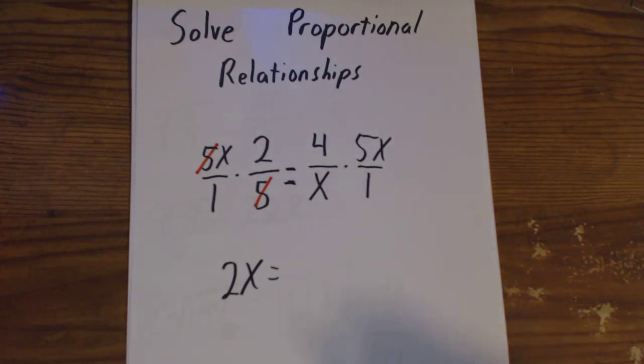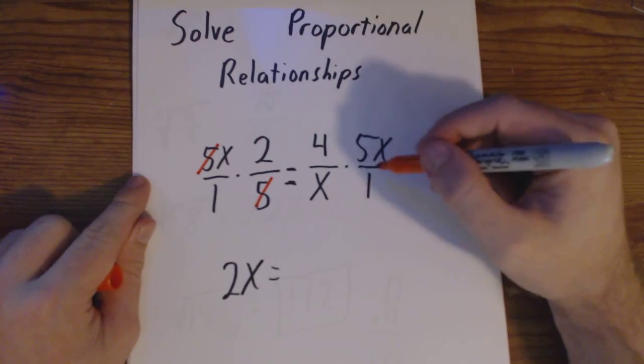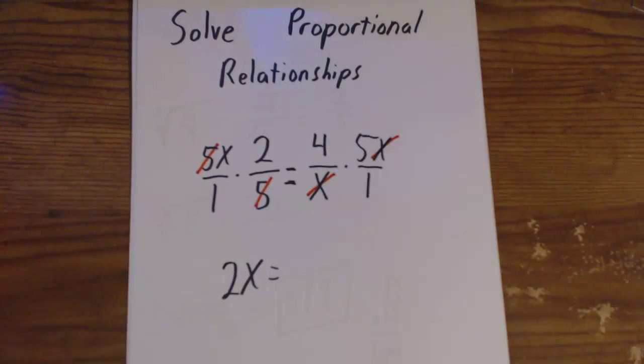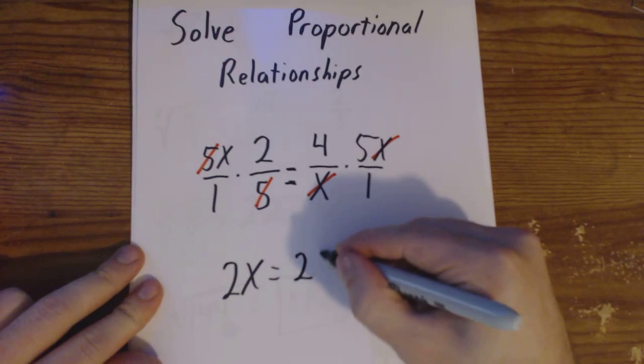Looking at the other side again, we have two fractions that we are multiplying. We can cross cancel. This x and this x are going to cancel. All I'm going to have left on the right side is 4 times 5, which is going to be 20.